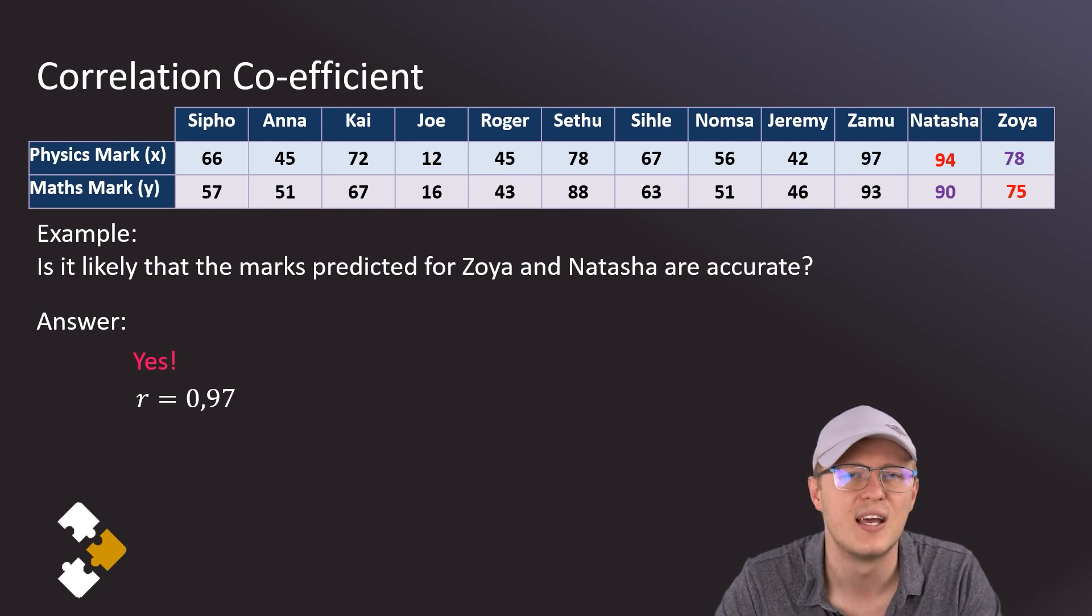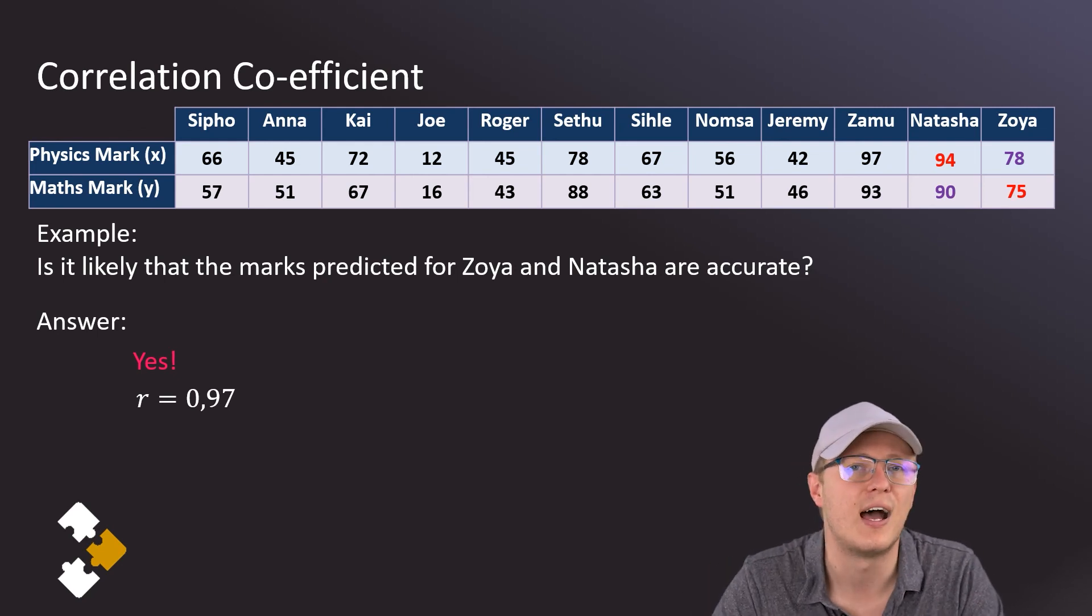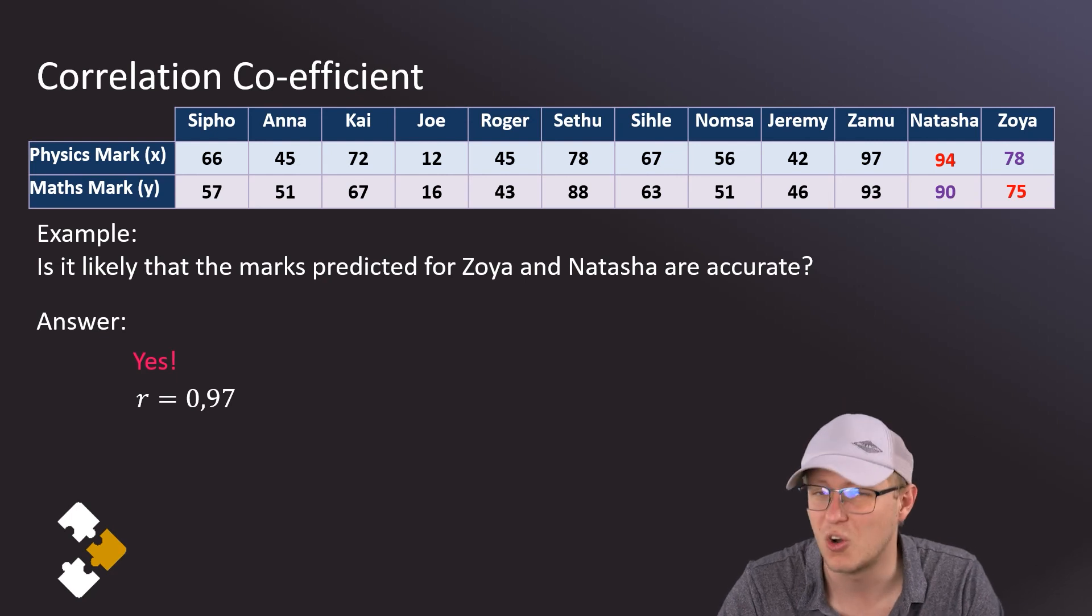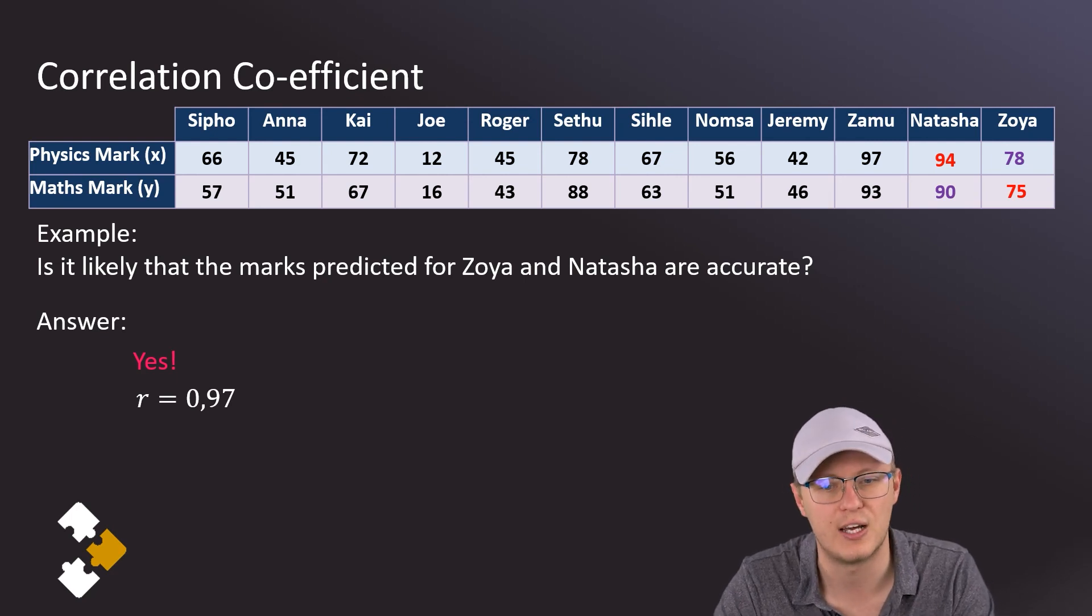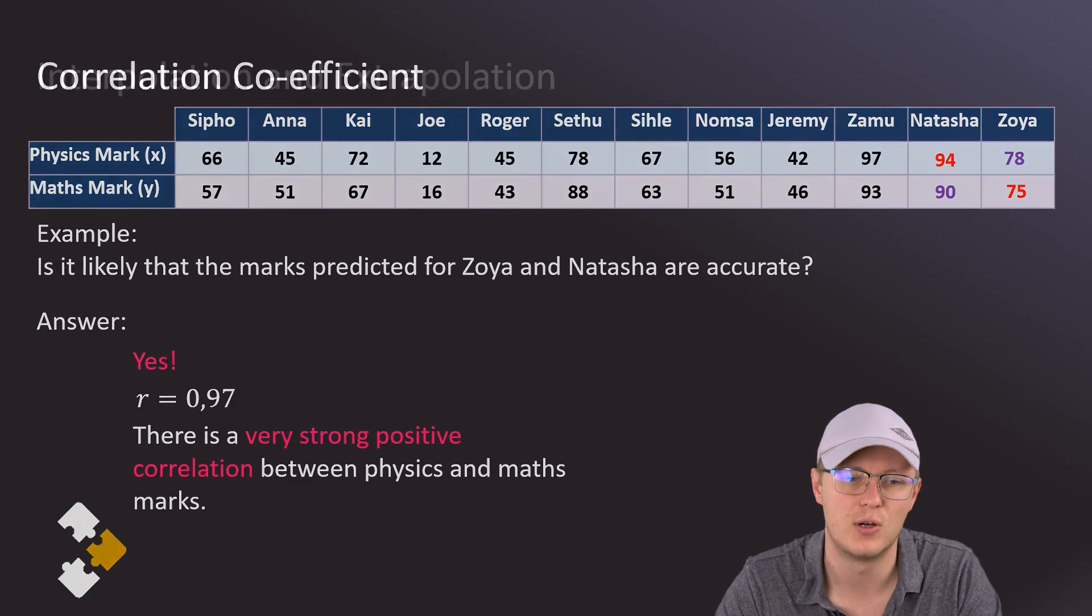And that means that the points on our scatter plot are going to be very very close to the line, and it's likely that any additional points that we find or predict are also going to be very close to the line. So there's our writing: strong positive correlation, and that's why we do trust our prediction.